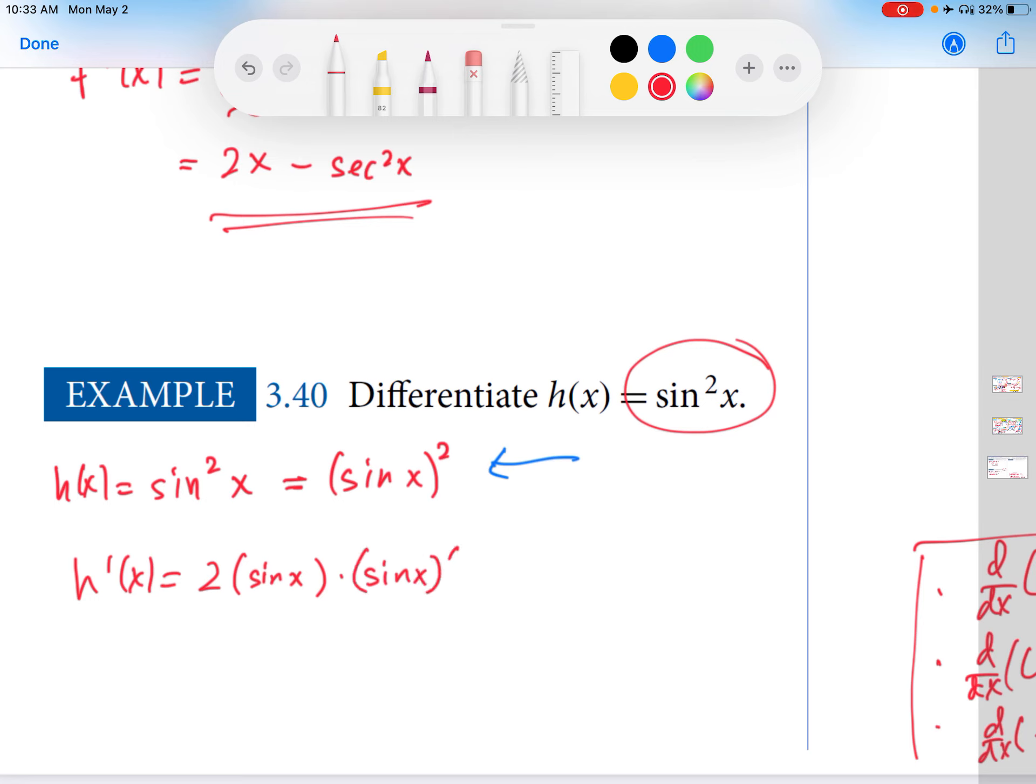So again, I'm using the chain rule here. And then you can see that we need the derivative of sine x. We talked about it. It was the first one over here. So that derivative is cosine of x.